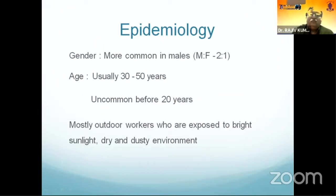Pterygium is more common in males; the male-to-female ratio is 2:1. It is usually seen between 30 to 50 years of age, uncommon before 20 years. Mostly outdoor workers are the sufferers, who are exposed to bright sunlight, dry and dusty environments.